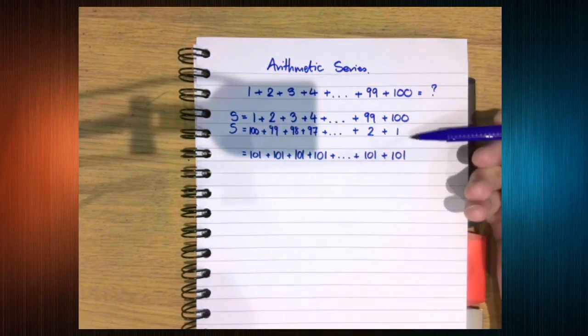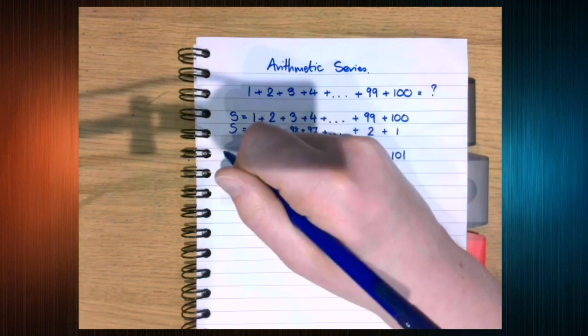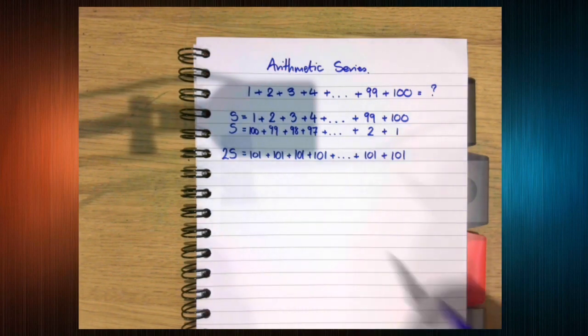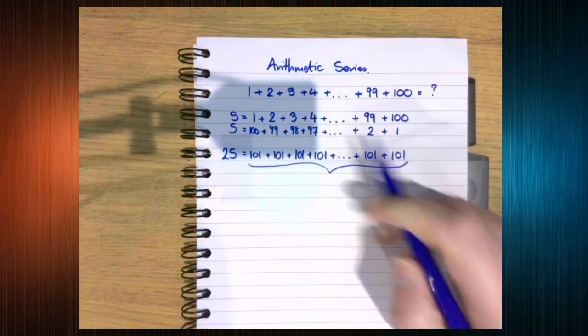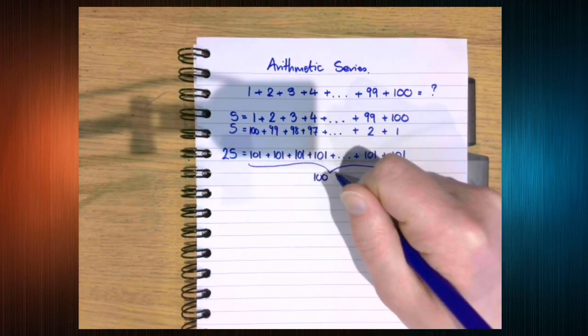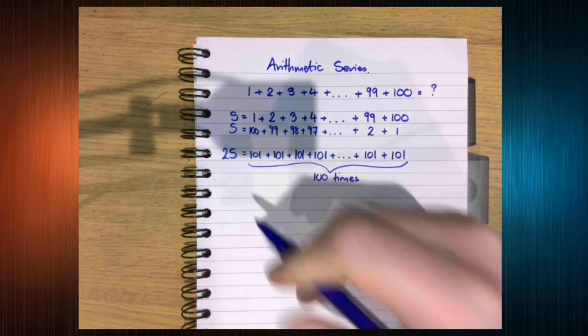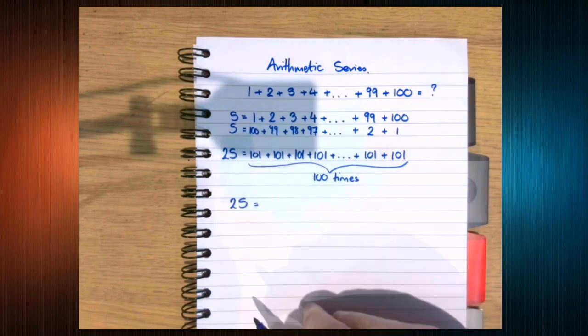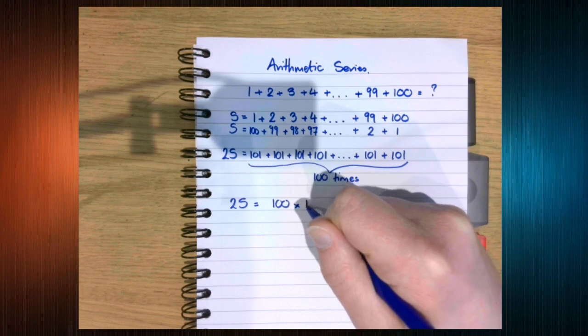He recognized that if you add these two sequences or series together, you get a lot of 101's. How many 101's? Well, there's 100 numbers. So he knew that 2 times S was 100 times 101.